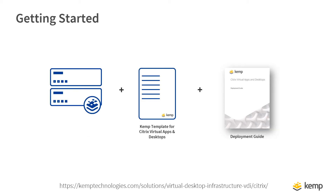To explore the simplicity of Kemp for load balancing Citrix virtual apps and desktops, all you need is a Loadmaster, the Application Template, and the Deployment Guide. All this is standard Loadmaster functionality available on all platforms at no additional charge. The template and guide can be downloaded from the Kemp website, where you can also download a 30-day trial version of a virtual Loadmaster appliance.